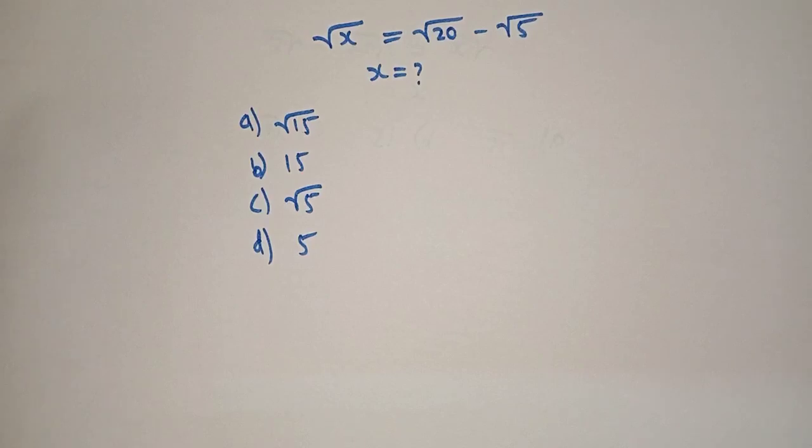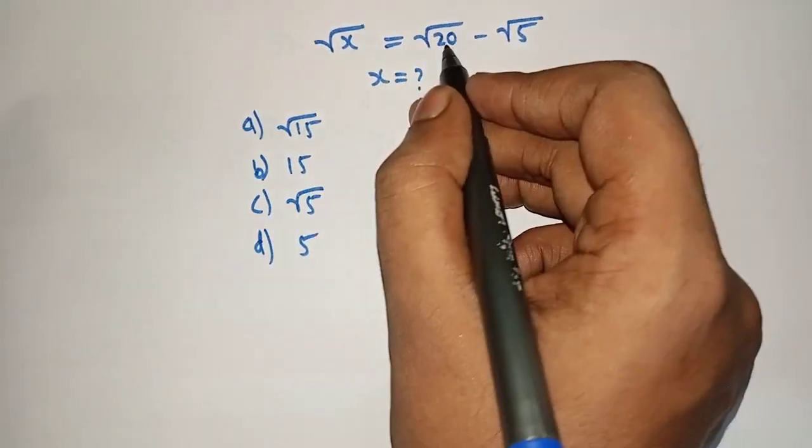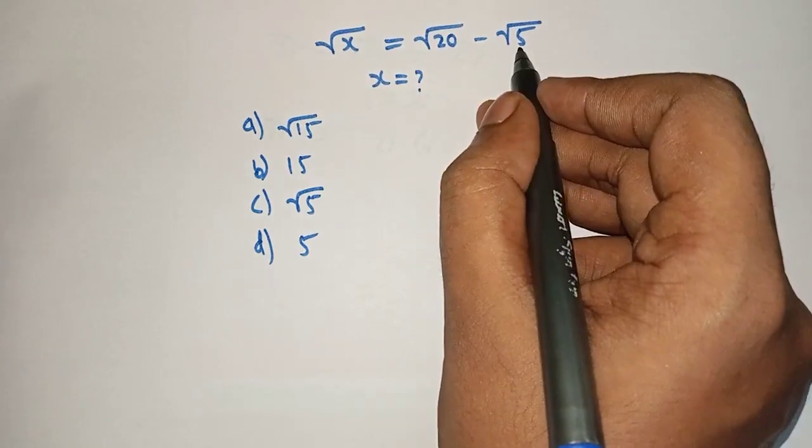Hello friends, welcome to aha maths. Square root of x equals square root of 20 minus square root of 5.